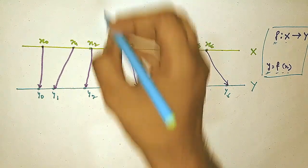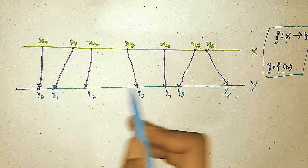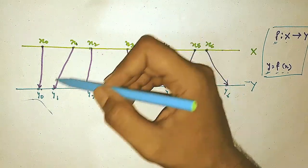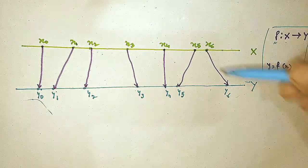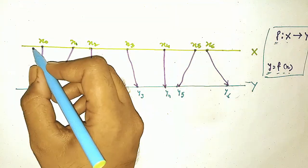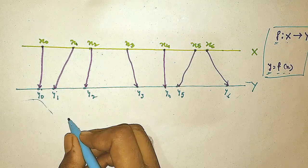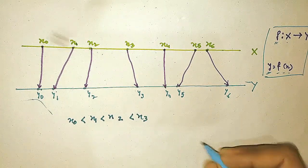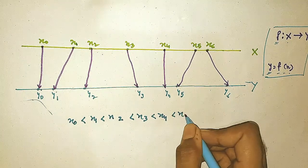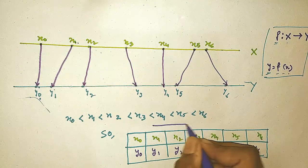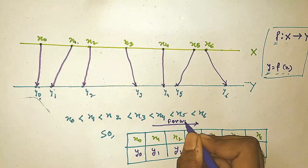First we need to know about the function. Let f be a function from x to y, so y equals f of x. Corresponding to every value of x there is a y value: for x0 there is y0, for x1 there is y1, for x2 there is y2, and so on up to xn. These x values are all in increasing order: x0 less than x1 and so on. The y values in the picture are also in increasing order, but that is not mandatory. This table contains x values and y values in ascending order of their suffix — x0, x1, x2 — this suffix value.